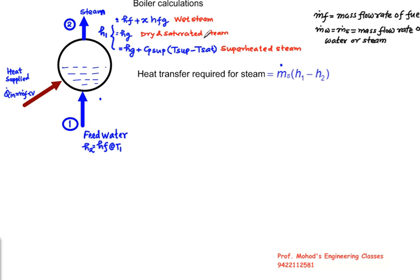This data is quoted to you, so you can calculate H1 and H2. Mass of fuel and calorific value will be provided. So heat transfer required for steam is M dot S into H1 minus H2.